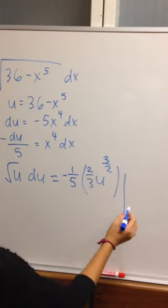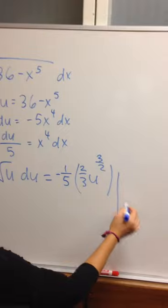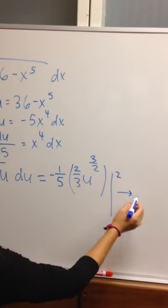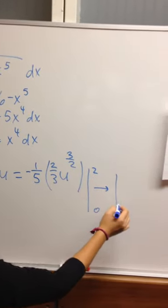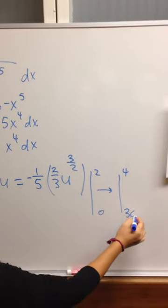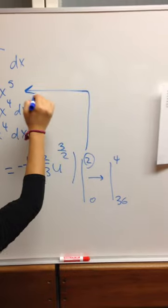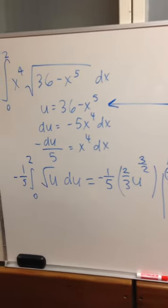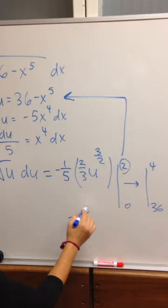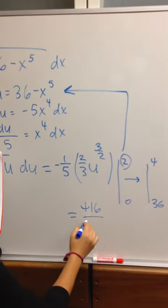And you're taking that from 0 to 2, which once translated to u is 4 to 36, because you're putting these into where u is. And the answer is 416 over 15.